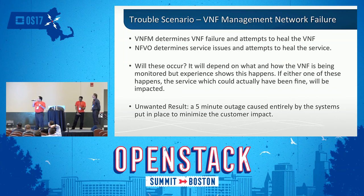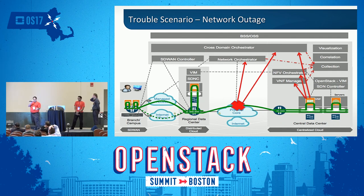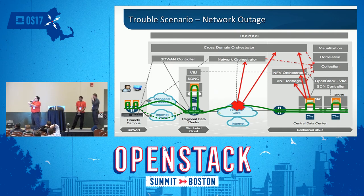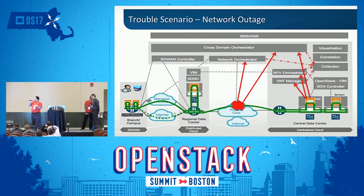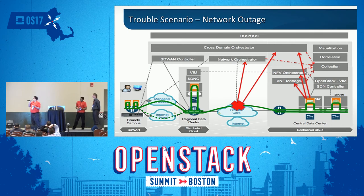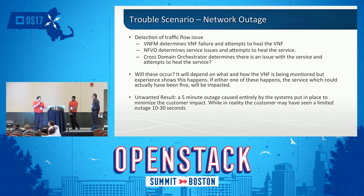In our third scenario, something completely out of the domain of OpenStack goes down — something in a core network or a managed access network. If you're monitoring for traffic flow, you think your service is down. Because they don't look outside of their domain, they think it's something inside their domain. So they may try and heal that VNF when the VNF is up and fine. When the network orchestrators fix that external issue — maybe 20 or 30 seconds — the customer could be up and running. But with VNFs running on VMs, these VNFs often take five minutes just to boot and get their interfaces back up. So instead of a 30-second outage, it's potentially a five-minute outage. And we've seen these scenarios occur.